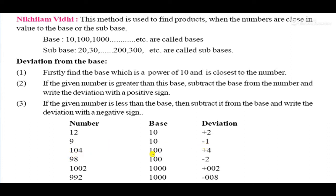For 104 — base is 100, so 104 minus 100 equals plus 4. For 98 — base is 100, so 100 minus 98 equals minus 2. For 1002 — base is 1000, so 1002 minus 1000 equals plus 002. Don't remove the zeros. For 992 — base is 1000, so 992 minus 1000 equals minus 008.